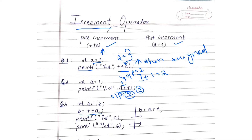Here b = ++a means pre-increment comes first. ++a increments a from 1 to 2, so b is equal to 2. Now a value becomes 2 and b is equal to 2 — so both are 2.